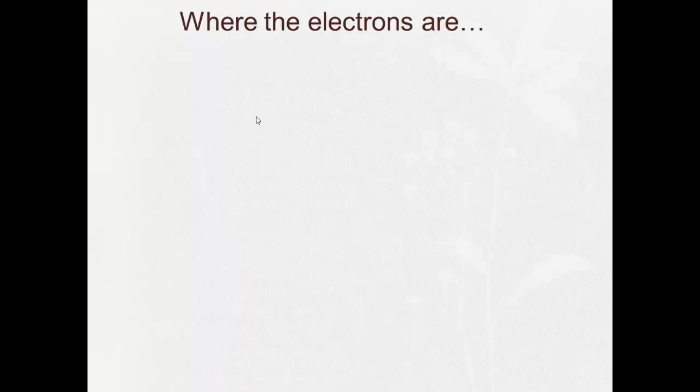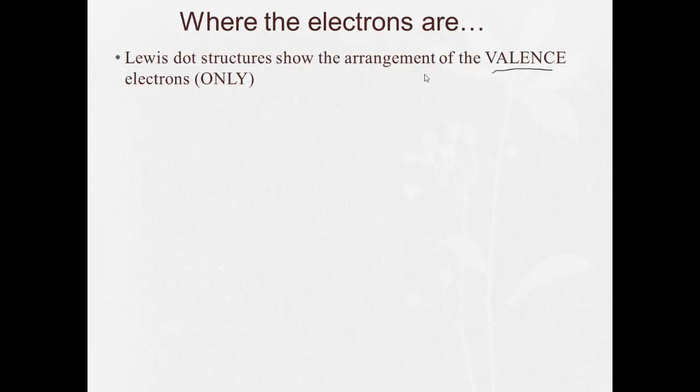Lewis dot structures tell us where the electrons are, specifically the valence electrons only. Remember, the only electrons that take place in chemical reactions are the valence electrons. The inner electrons, also known as the kernel, aren't important for chemical reactions.